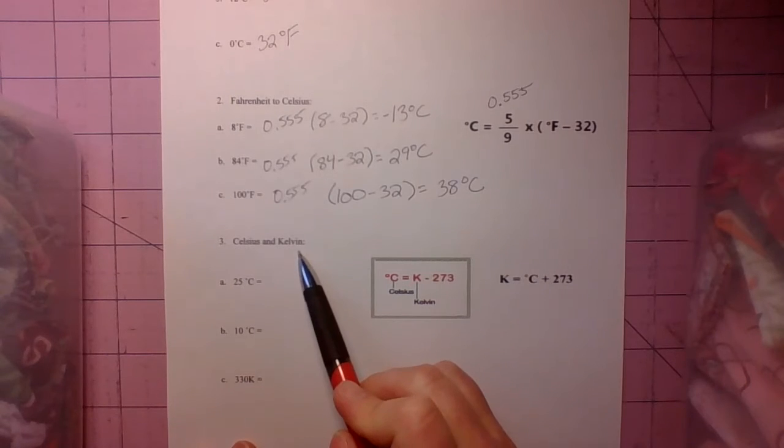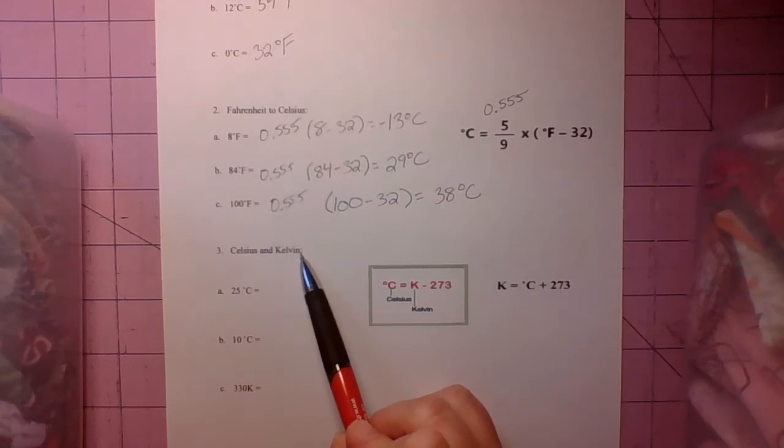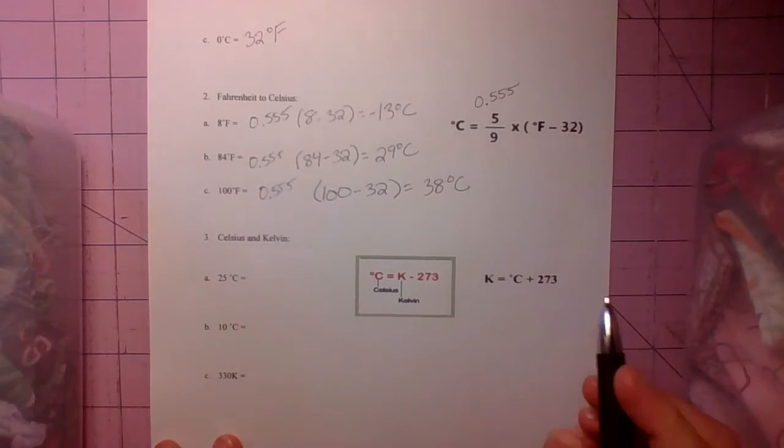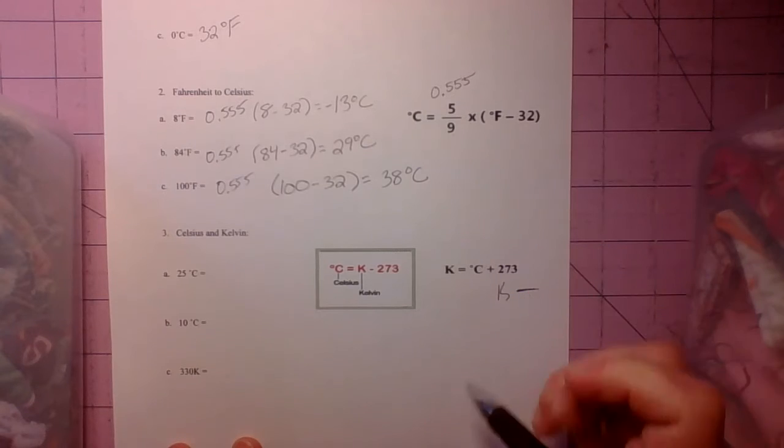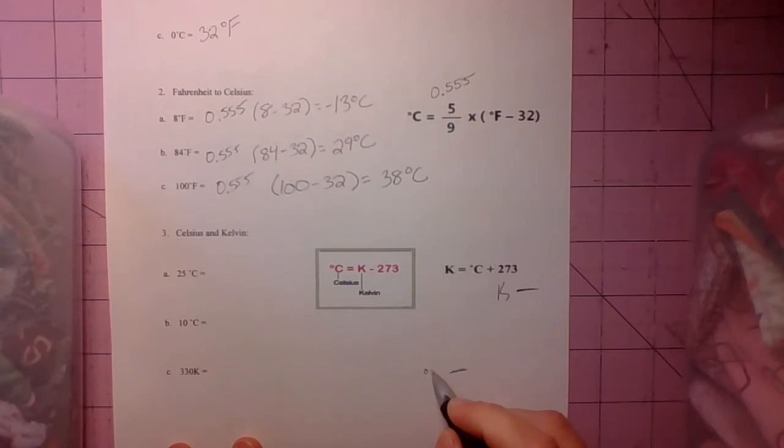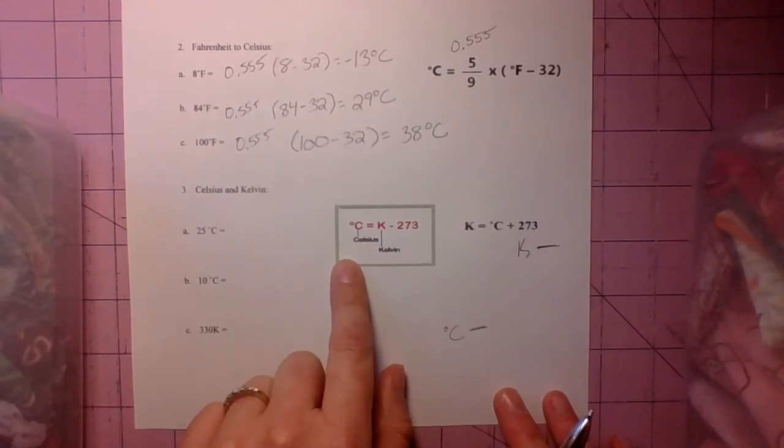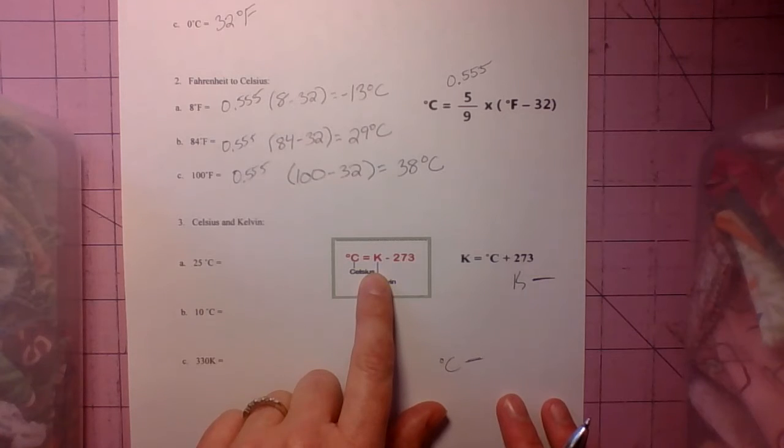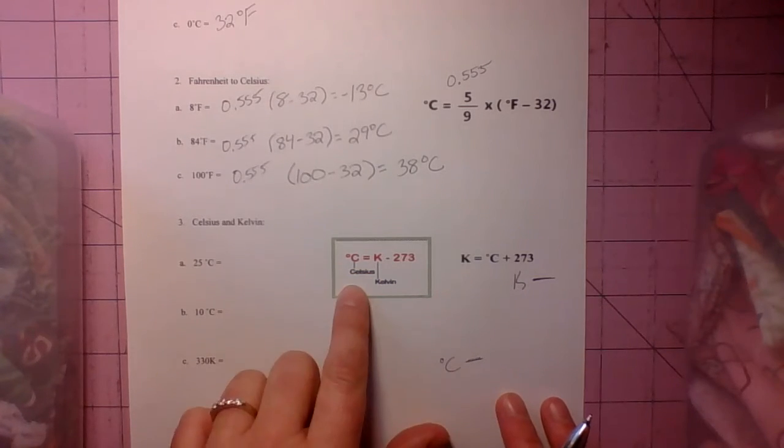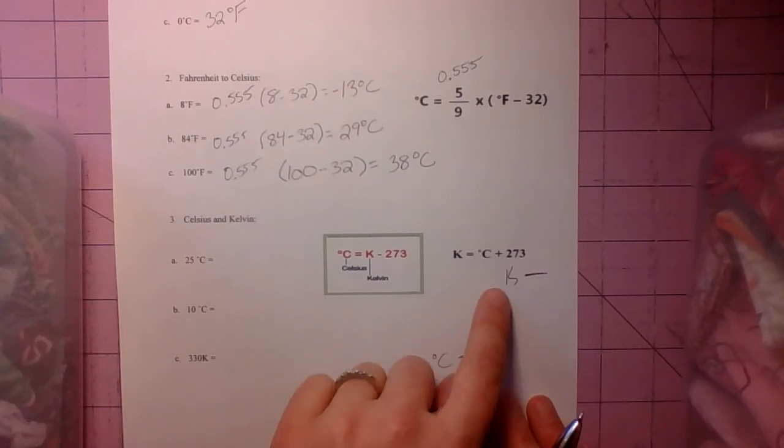So Celsius and Kelvin. So when we compare Celsius and Kelvin temperature scales, Kelvin's always going to be a higher number. Kelvin's always going to be a much higher number than a degree Celsius number. Because these formulas are very easy. If you start with Celsius to convert it to Kelvin, to convert it to Kelvin, you need to add so that number is bigger.